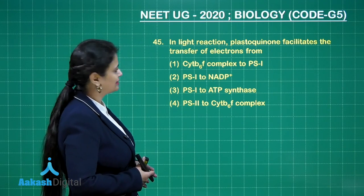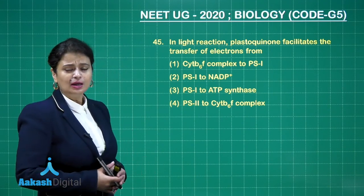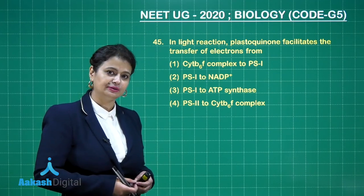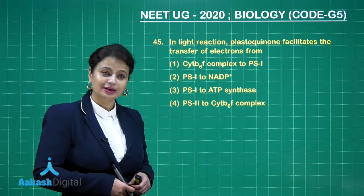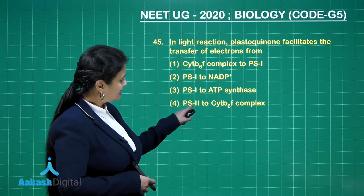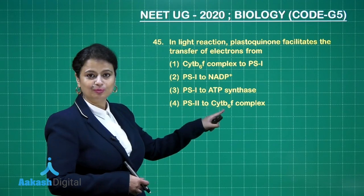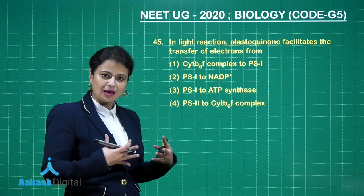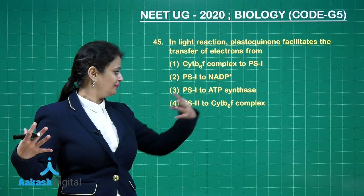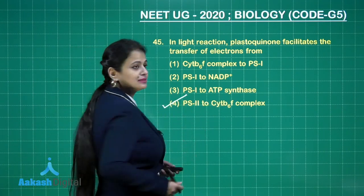Another question on photosynthesis: in the light reaction, plastoquinone facilitates the transfer of electrons. Plastoquinone is a very special mobile carrier — it takes electrons from Photosystem II and transfers them to the cytochrome b6f complex. So plastoquinone is the mobile carrier connecting Photosystem II and the cytochrome b6f complex, which is our right answer.